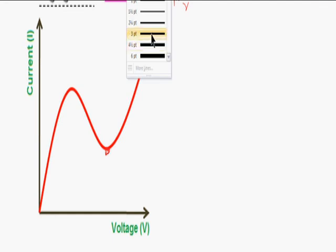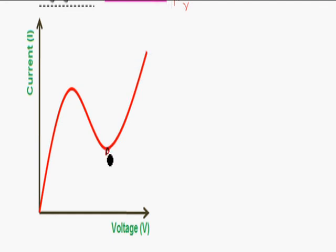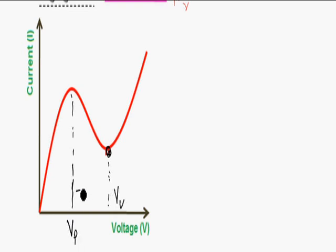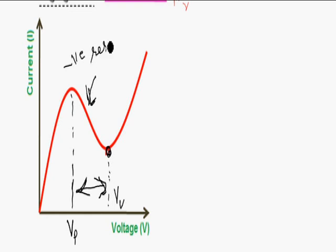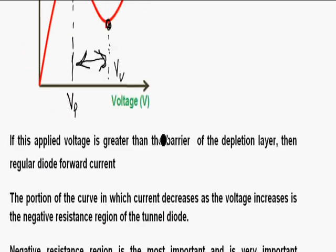The valley voltage and the peak voltage define the negative resistance region — the distance between peak voltage and valley voltage determines the span of negative resistance, which is very important for using the tunnel diode in relaxation oscillator circuits.